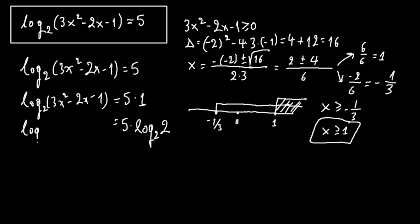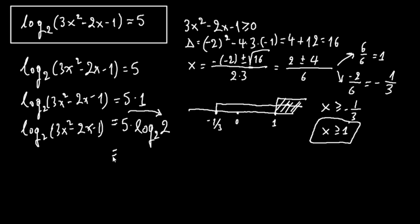So we have log base 2 of (3x squared minus 2x minus 1) equals 5 times log base 2 of 2. Now we're getting somewhere. Using the property of logarithms, we can take 5 as the exponent, so this can be written as log base 2 of 2 raised to the 5th power.